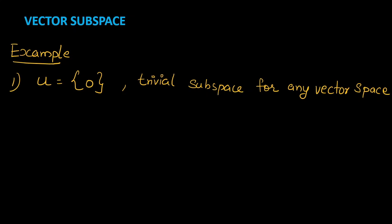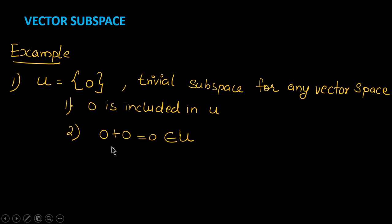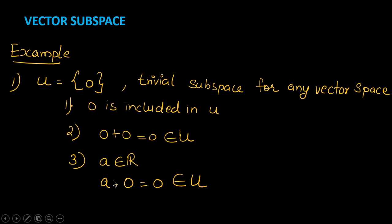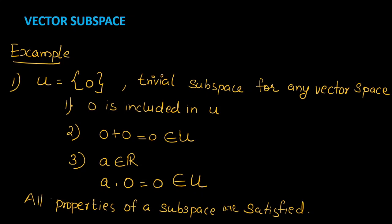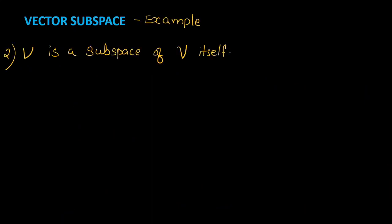A very trivial example of a subspace is the set {0} itself. U has only one element, 0. The first condition is satisfied — 0 is included in U. The second condition: when we add any two elements of U, the result should belong to U — 0 + 0 = 0. The third condition: A × 0 = 0, so that is also satisfied. Therefore {0} is a subspace. Another trivial example is the set V itself — V is a subspace of V.